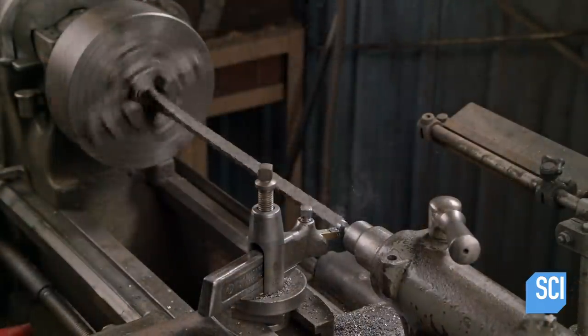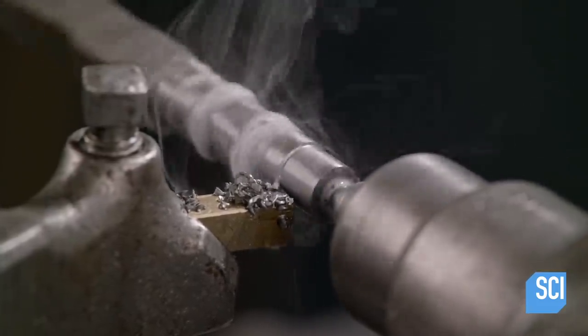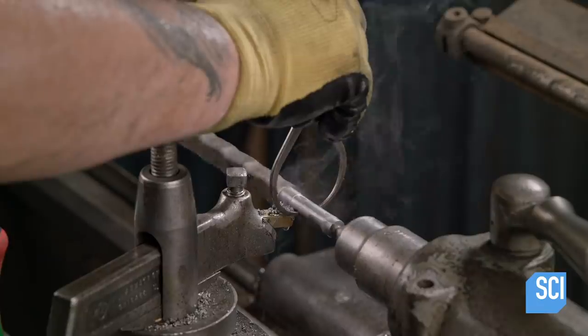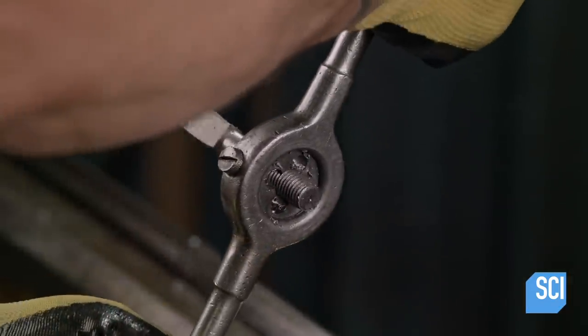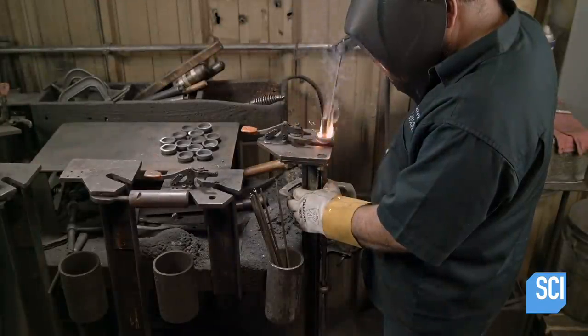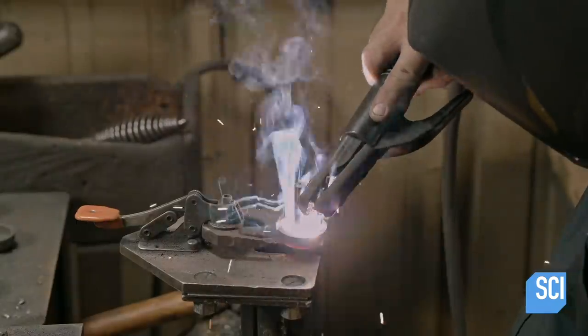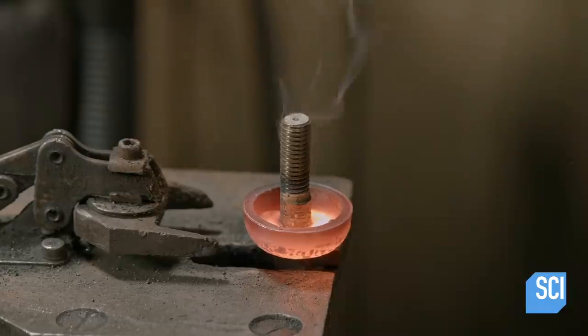A baluster spins in a lathe as tools cut it to length and round the end to the correct diameter. The operator measures the diameter. He inserts the rounded end in a die that carves a thread into it. A worker welds a steel cup just above the threaded part of the baluster. This cup will support the baluster once it's been installed on the thread.